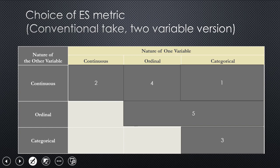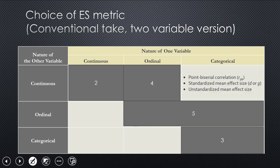So if you think about two variable effect sizes, there's a whole matrix of them. You can consider them as a function of whether one variable is continuous, ordinal, or categorical. And the other one along the same dimension. So if you have a categorical independent variable and a continuous outcome variable, that's a point biserial correlation.